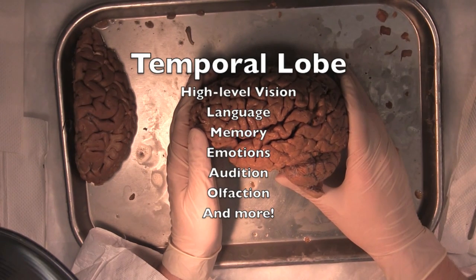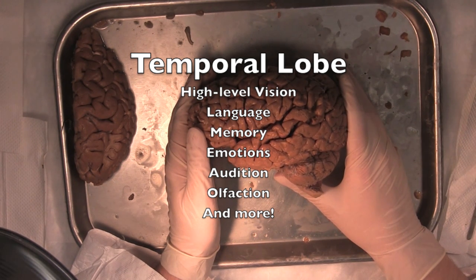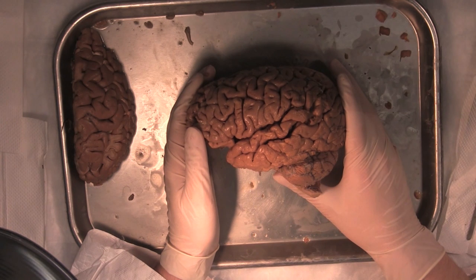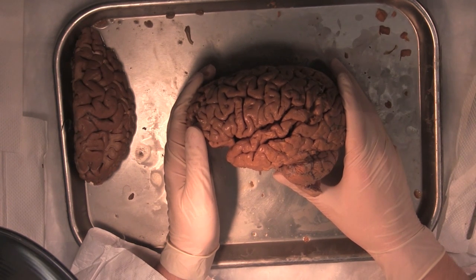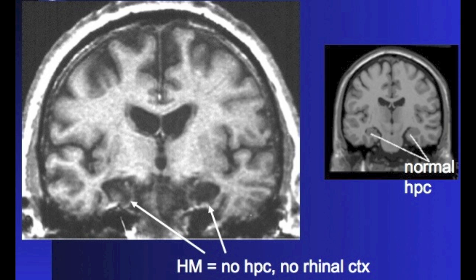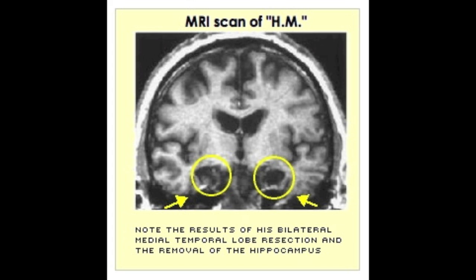Besides higher-level vision, the temporal lobe is responsible for language, memory, emotions, and audition, among other functions. We mentioned that patient HM had a very specific area of his temporal lobe — his hippocampus — removed in order to control his epilepsy. This resection of the temporal lobe induced an inability for him to store new long-term memories.